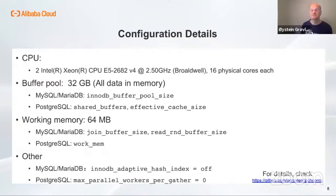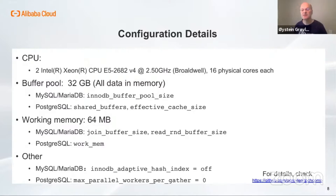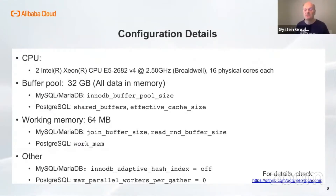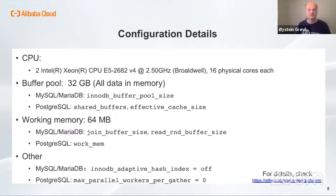Some details of the configuration: we used a 32 gigabyte buffer pool with indexes, and the database size for MySQL and MariaDB is around 20 gigabytes, so all the data fit in memory. We also bound the server processes to one specific socket to avoid NUMA effects. I tried to make the working memory for each query about the same in all systems. For MySQL and MariaDB, we turned off the adaptive hash index since it often gives unstable performance and requires the same data pages to be accessed many times. We also turned off parallel execution in Postgres. For more details, the test scripts, config files, and results are available at the link shown.